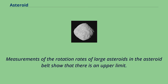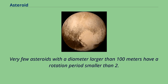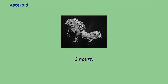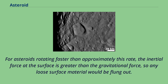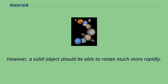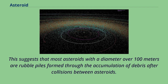Measurements of the rotation rates of large asteroids in the asteroid belt show an upper limit: very few asteroids with a diameter larger than 100 meters have a rotation period smaller than 2.2 hours. For asteroids rotating faster than approximately this rate, the inertial force at the surface is greater than the gravitational force, so any loose surface material would be flung out. This suggests that most asteroids with a diameter over 100 meters are rubble piles formed through the accumulation of debris after collisions between asteroids.